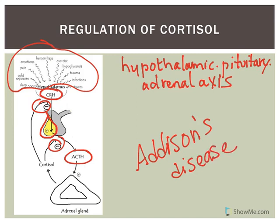If you cannot produce cortisol, you will not be able to deal with stress. Look up Addison's disease and what results from having it — people with Addison's disease cannot secrete cortisol or aldosterone, because it specifically damages the adrenal cortex.